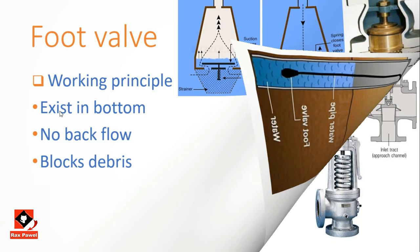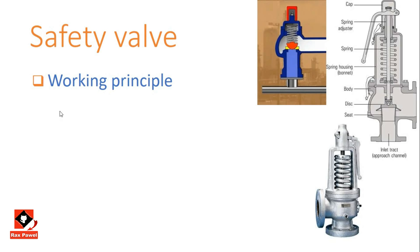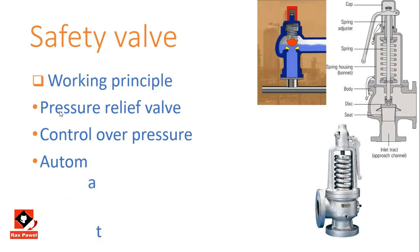Working principle of the safety valve: allowable pressure is balanced by a spring, and over-pressure conditions in the system are controlled by releasing the flowing fluid out of the system. Also known as a pressure relief valve, it works automatically to ensure safety when pressure increases. It can be used for both liquids and gases and is commonly seen in steam lines.